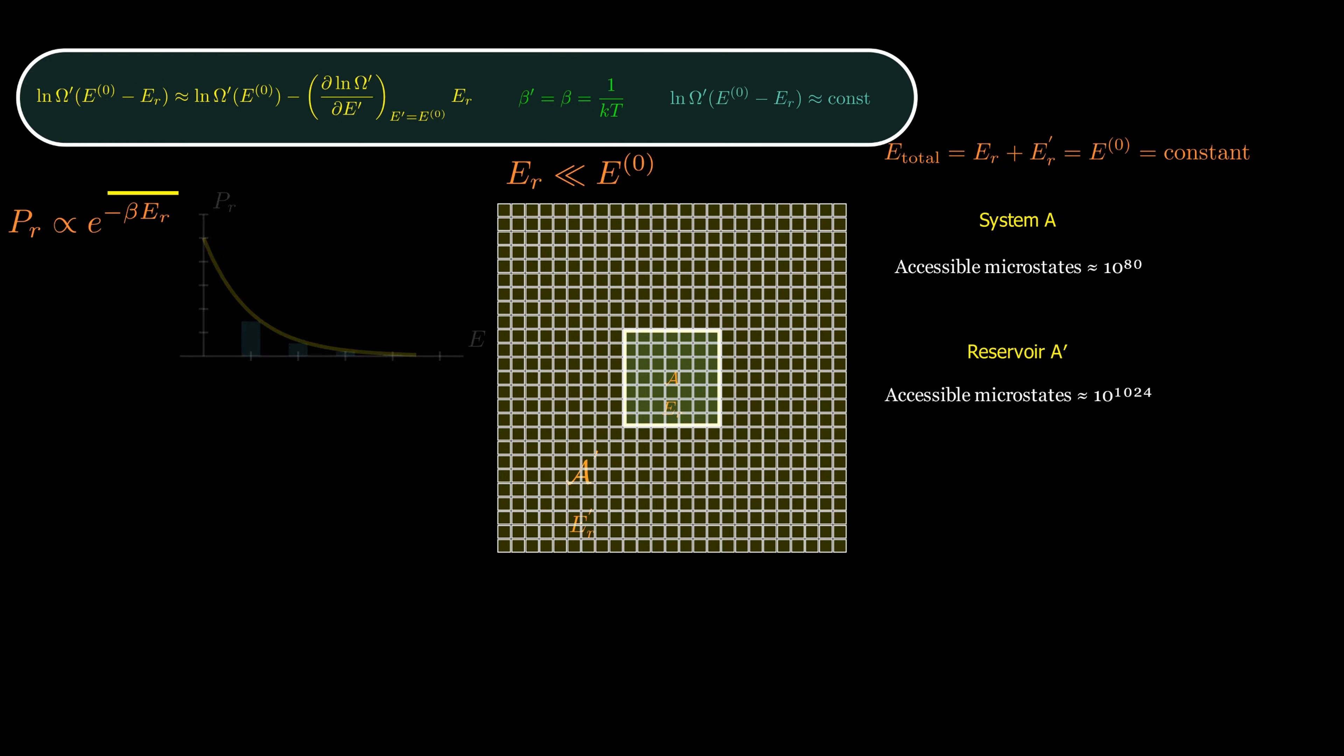To get the actual probability, we normalize over all possible states, giving us the canonical ensemble probability distribution. The quantity Z is called the partition function, and it plays a central role in statistical mechanics. It ensures that all probabilities add up to one. Now here's where things get interesting for machine learning.